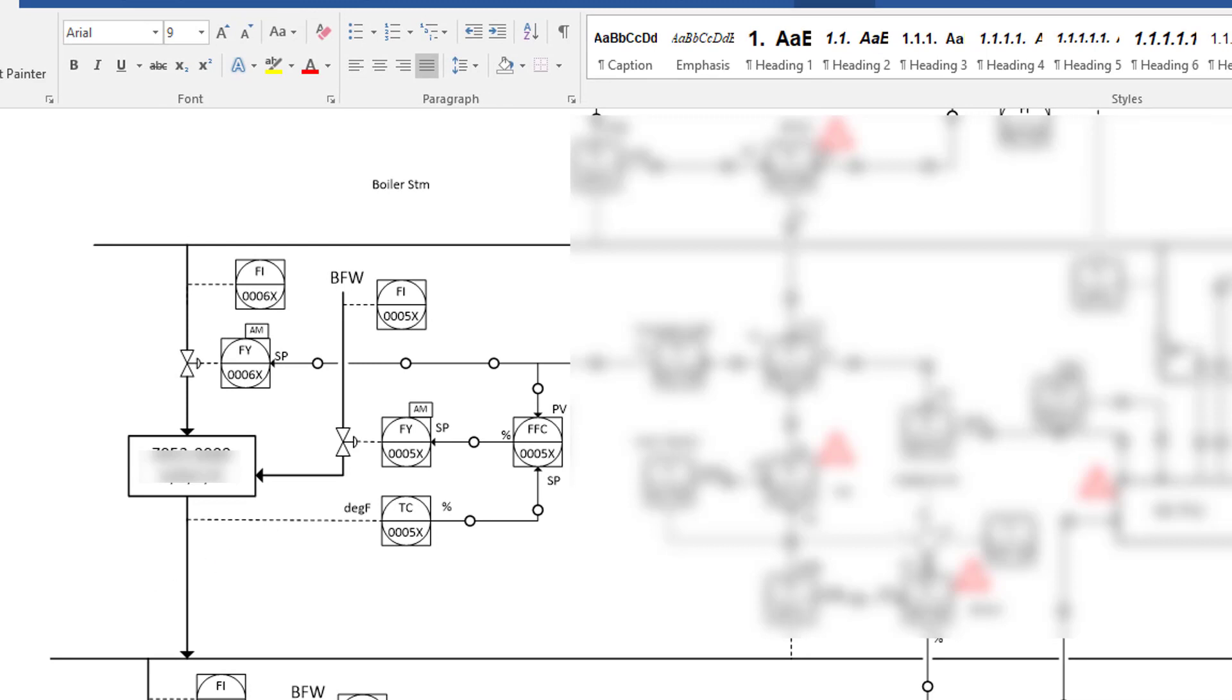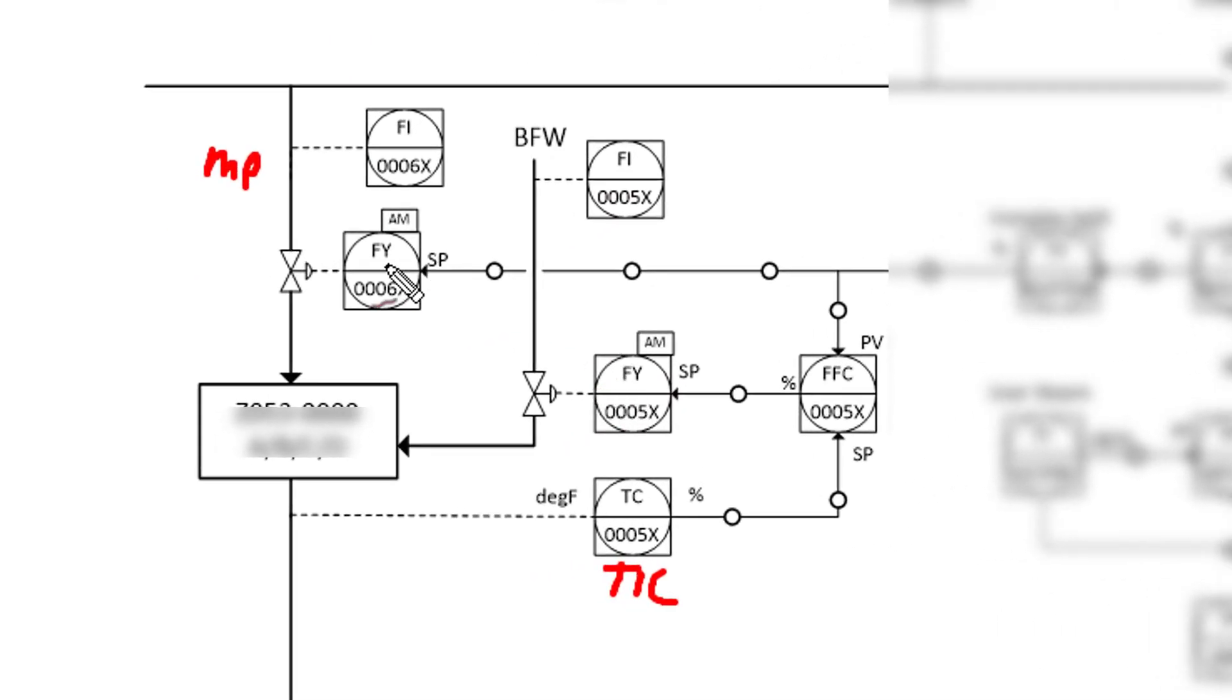I'm going to have to blur out a few of these numbers, but here is the temperature controller. Let's assume that's your master TIC. Here's your steam, that's your MP steam—well in this case it's HP steam—here's your boiler feed water. We're not really using these flow measurements. What we do is we take the output of this valve—it's drawn quite badly unfortunately here. Take the output of this valve, so the valve positioner signal as percent.